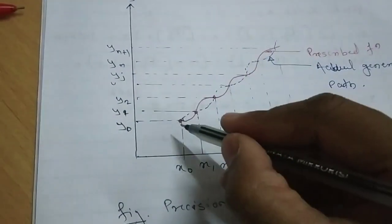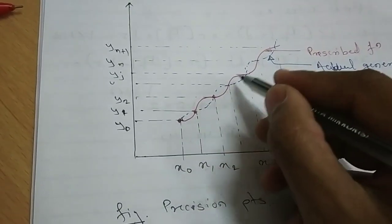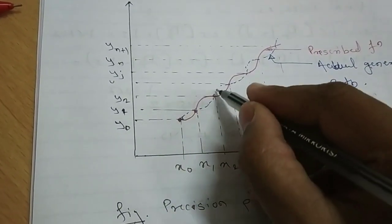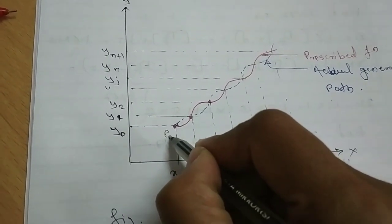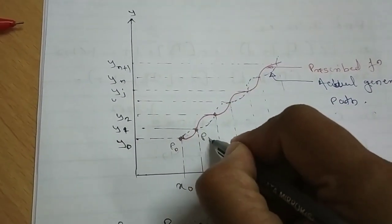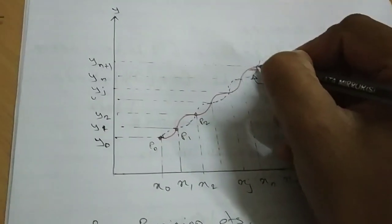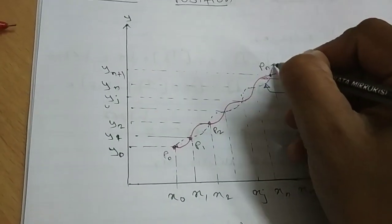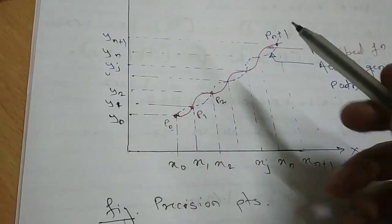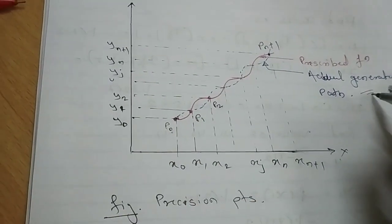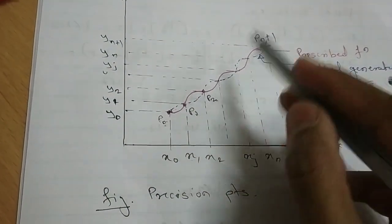And this point where this prescribed function and actual generated path meets are the precision points. Let's say p0, p1, p2, p(n+1). And these points follow the exact mathematical function. So this point is called as precision points.